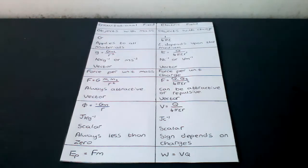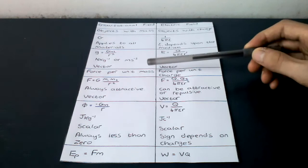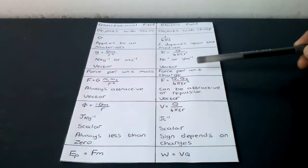They are both vectors. The definition of field strength is force per unit mass and force per unit charge.